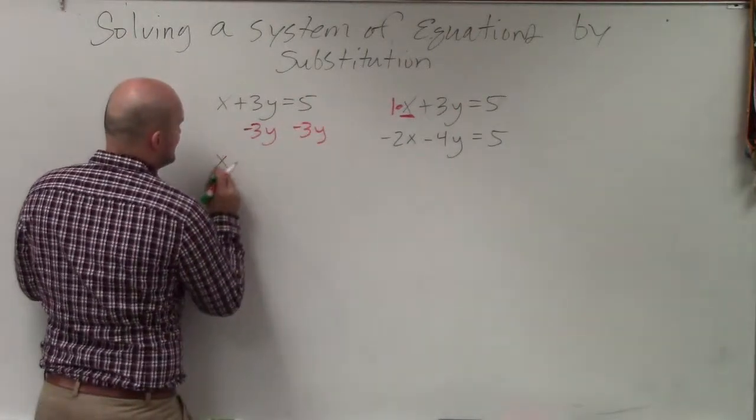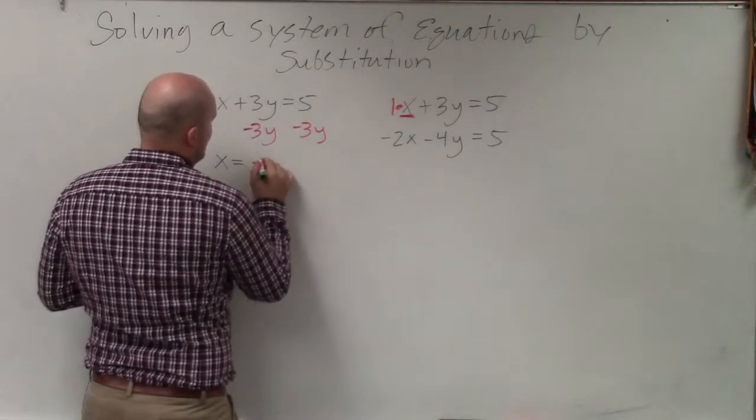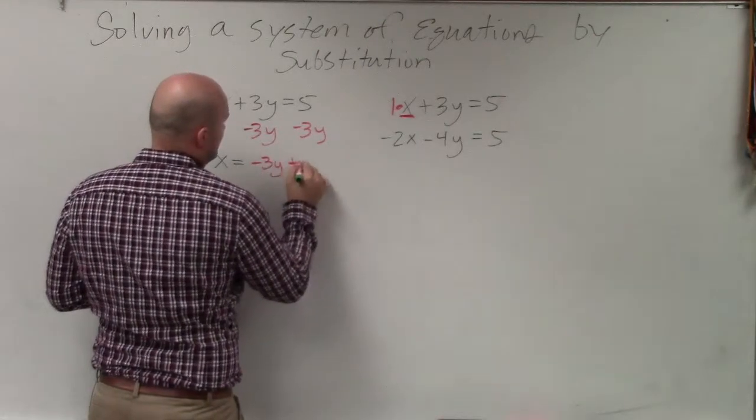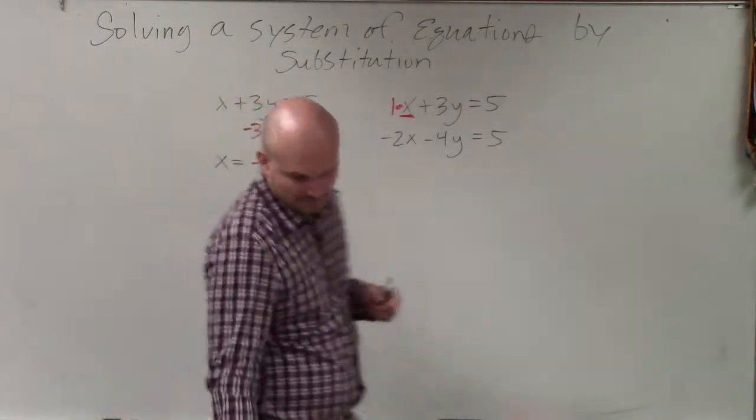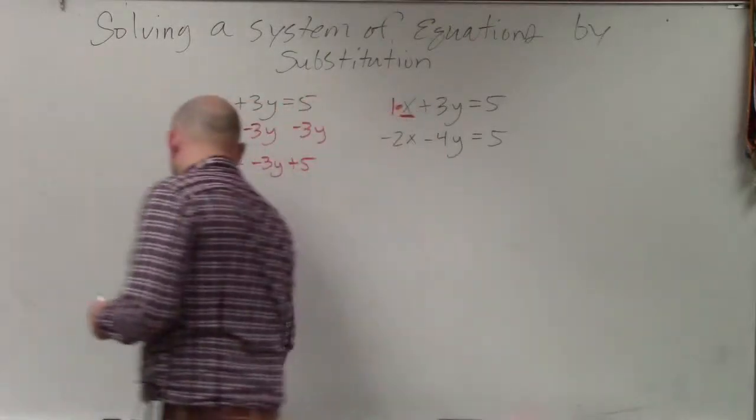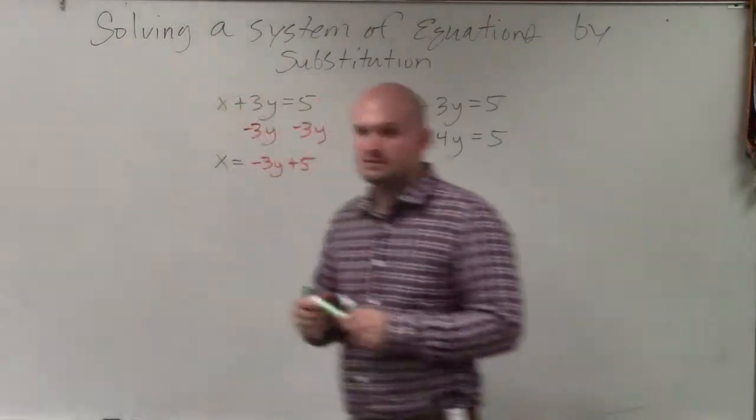is because all we have to do to solve for this variable is subtract the 3y. So therefore, x equals negative 3y plus 5. Does everybody see that?